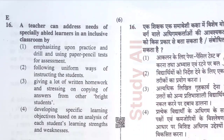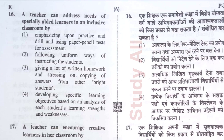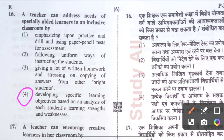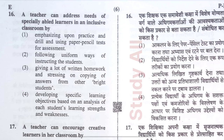Question number sixteen: A teacher can address the needs of especially-abled learners in an inclusive classroom by — the correct option is option four: developing specific learning objectives based on analysis of each student's learning strengths and weaknesses, and taking appropriate strategies accordingly.